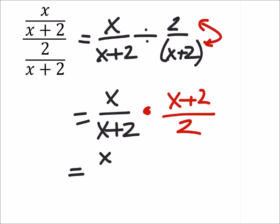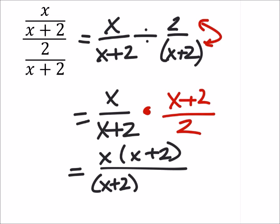Now I can make this one full fraction, so I got x times x plus two over x plus two times two, and we can see that the x plus twos will cancel out, leaving us with x over two.